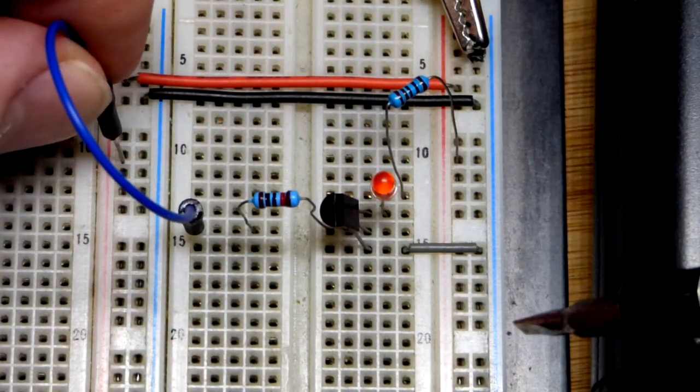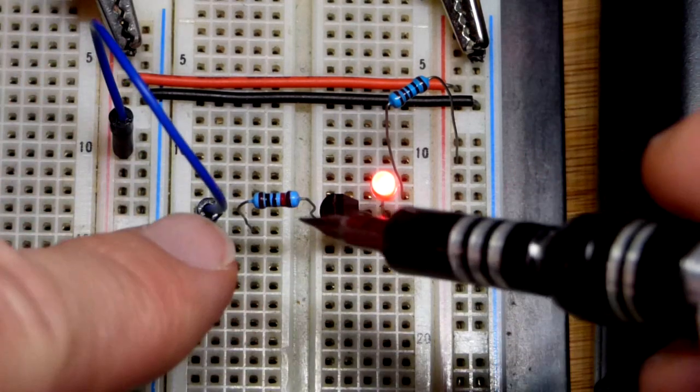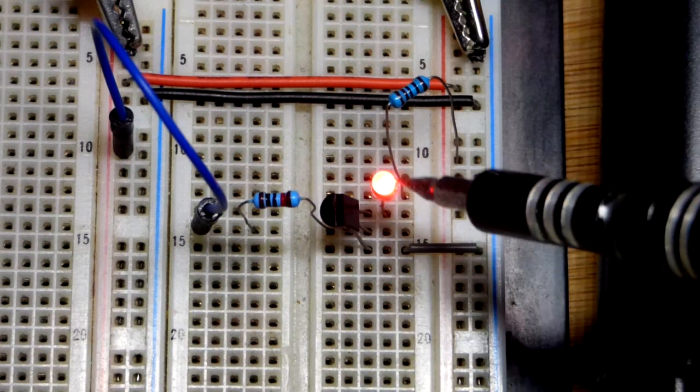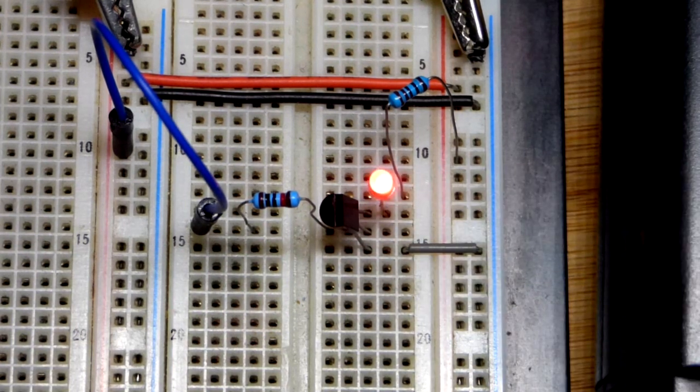If we want it to fully conduct, we go to the positive supply there. And enough current's going through that 10,000 ohm resistor, base, and emitter as we talked about before to get the LED to start conducting pretty much fully.